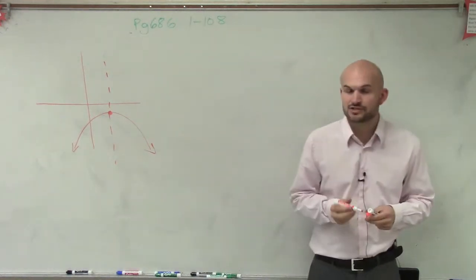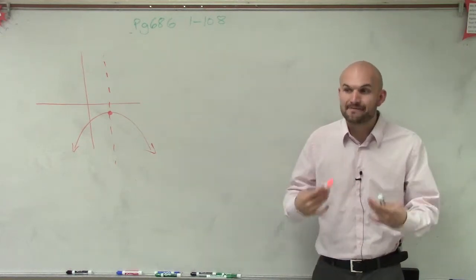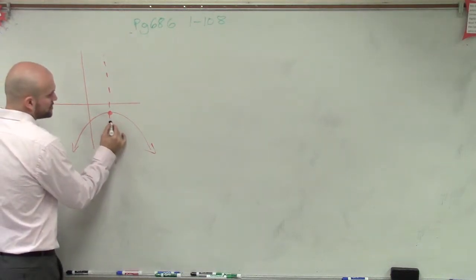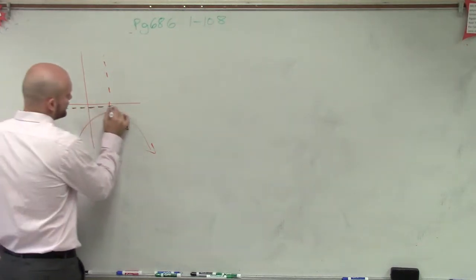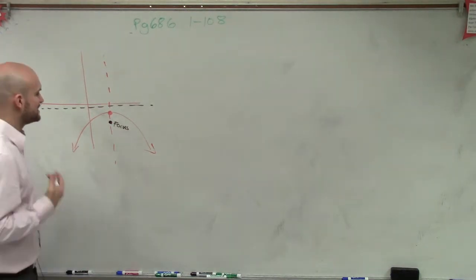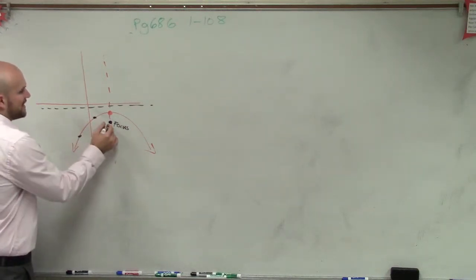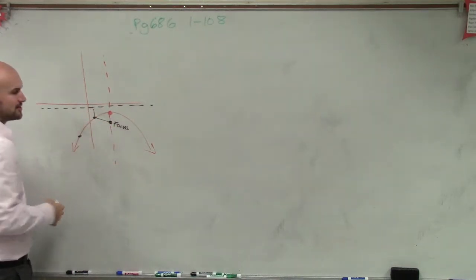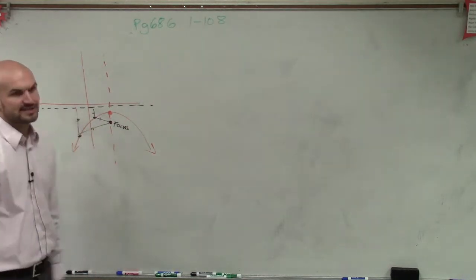When we entered conic sections, we started talking about what is really the definition of a parabola. The definition we discussed was that a parabola contains a very important point called the focus, and also a line called the directrix. For any point on the parabola, the distance to the focus and the distance to the directrix are equal — that was the definition of a parabola.